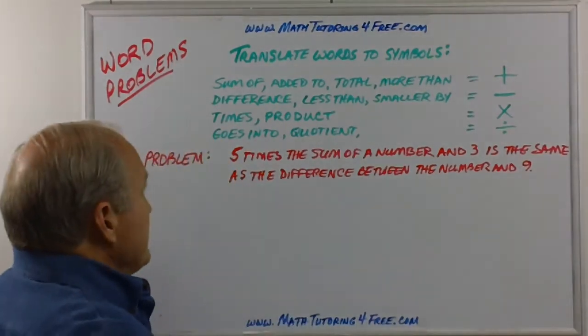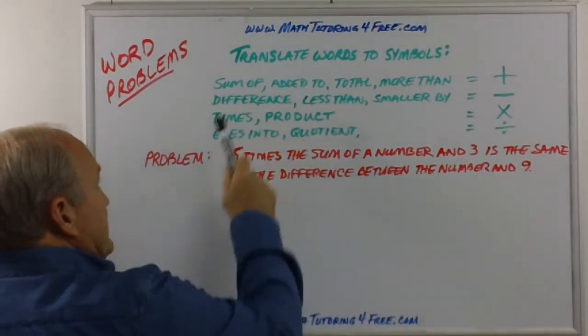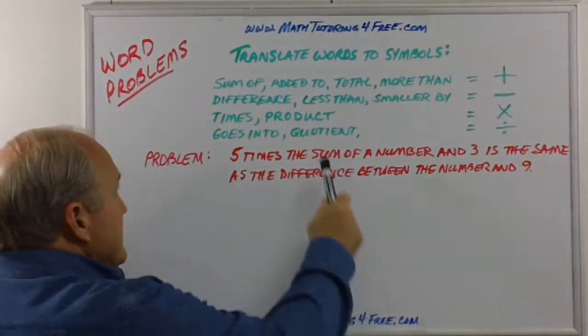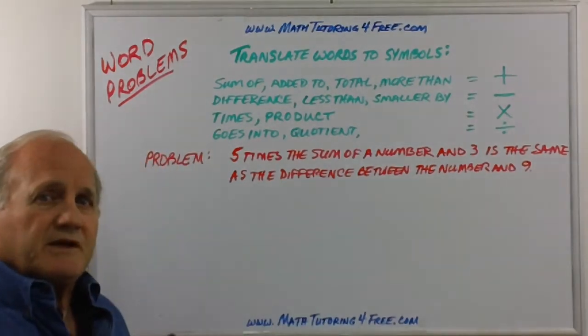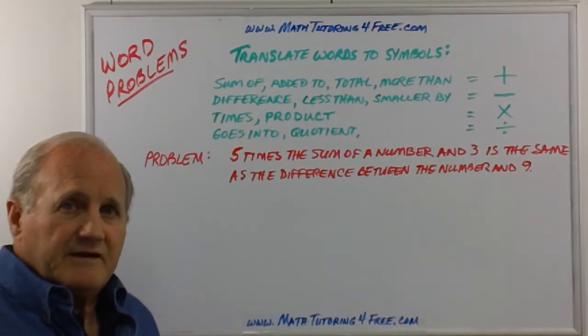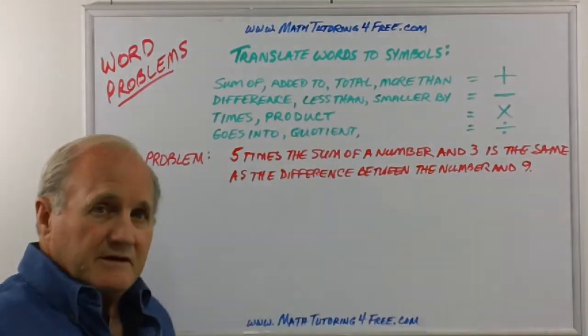For instance, the ones that we should be pretty familiar with: when we see the word sum of, added to, total, more than, we should be thinking oh I have to add. Those are all indications of adding two or more numbers together.